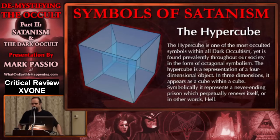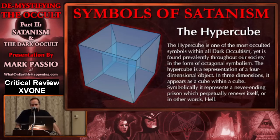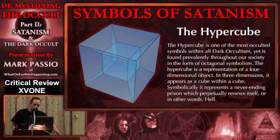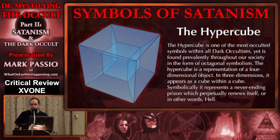The hypercube is a symbol of dark occultism — not Satanism specifically, but certainly a very deeply occulted dark occult symbol. It is one of the most occulted symbols within all dark occultism, yet it is found prevalently throughout our society in the form of octagonal symbolism. The two-dimensional projection of the hypercube, which is a representation of a four-dimensional object, is an octagon. And the octagon is one of the big Satanic symbols used everywhere. They also use the octagon in the form of two squares overlapping at 90-degree angles — the double square.